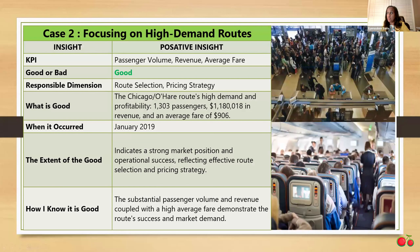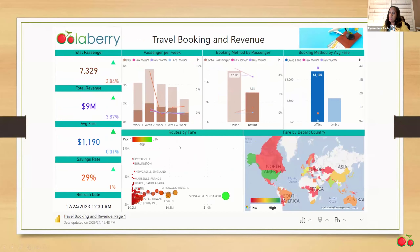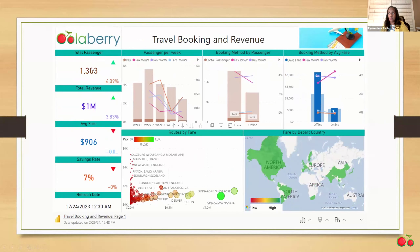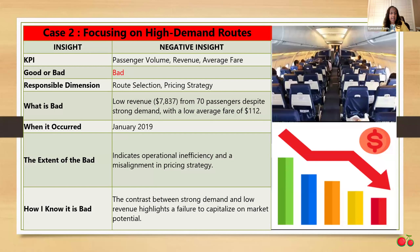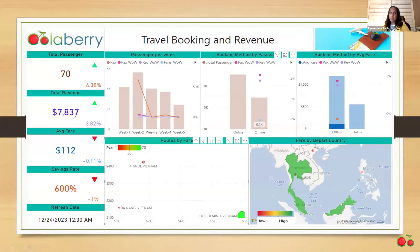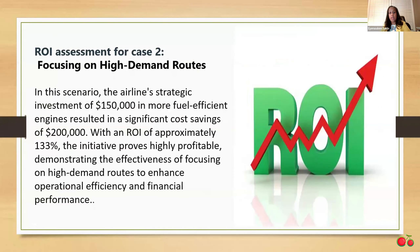The second case is based on high demand routes. I used KPIs including passenger volume, revenue, and average fare to select high-performing routes. As shown on the scatter plot, the green bubble represents the highest route, with 1,303 total passengers generating $1 million. On the negative side, looking at Vietnam, total revenue generated is $780,837 with 770 passengers and an average fare of $112. For this ROI, if we invest $150,000 in fuel efficiency and raise it to $200,000, the ROI is going to be 133%.